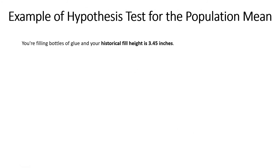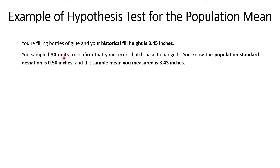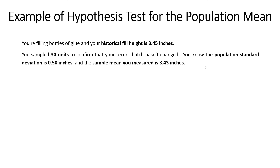Let's say you're filling bottles of glue and your historical fill height is equal to 3.45 inches. You sample 30 units from your recent batch, you know your population standard deviation is equal to half an inch, and the sample mean you measure in those 30 units is equal to 3.43 inches.